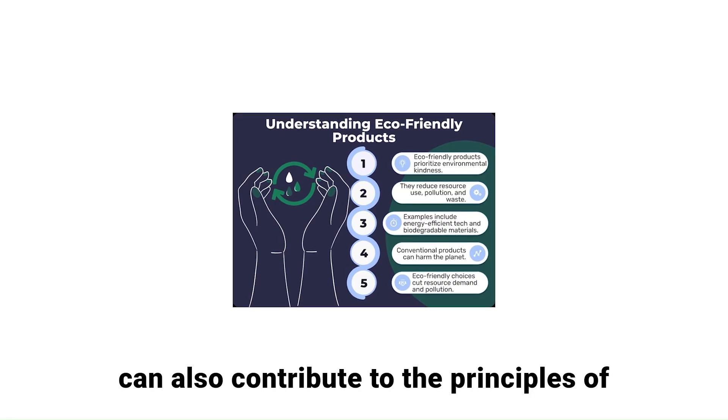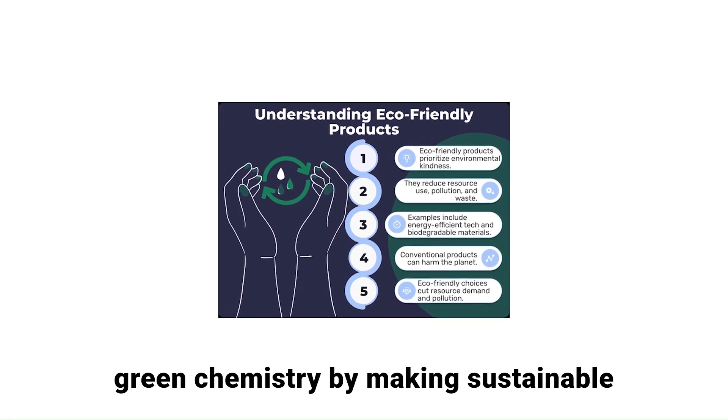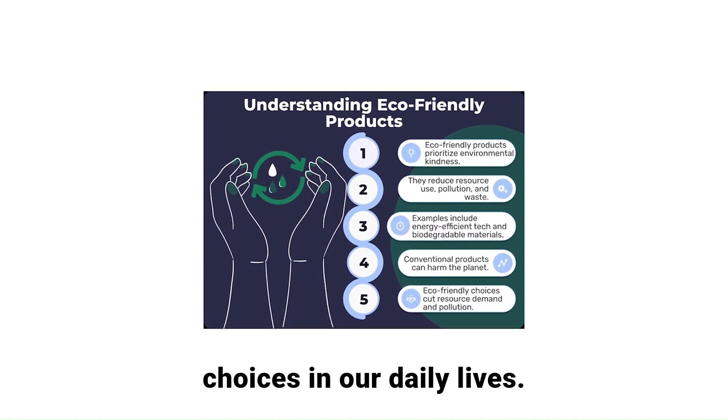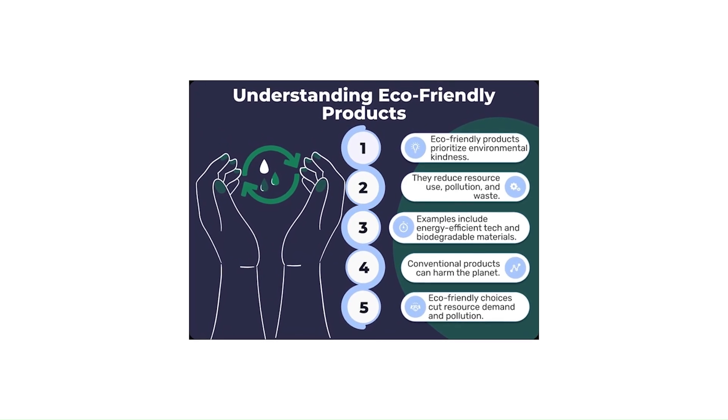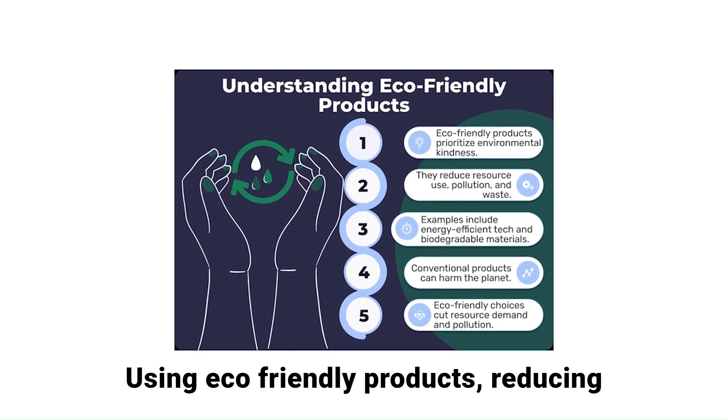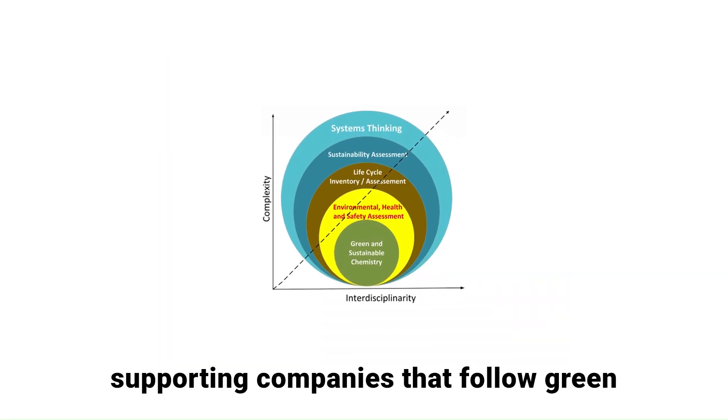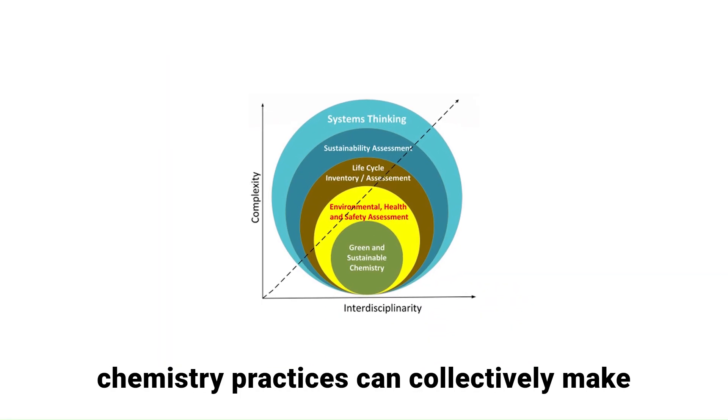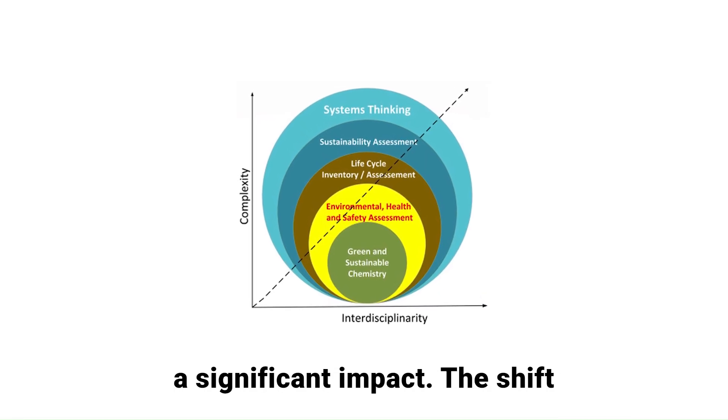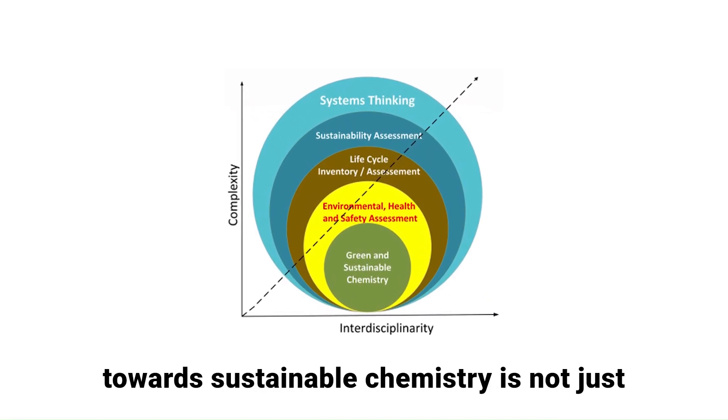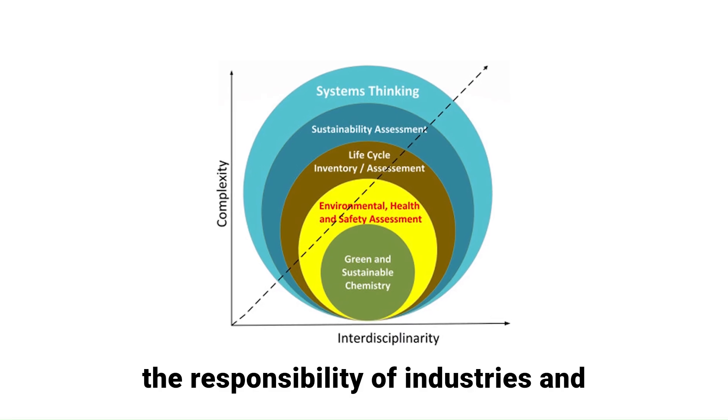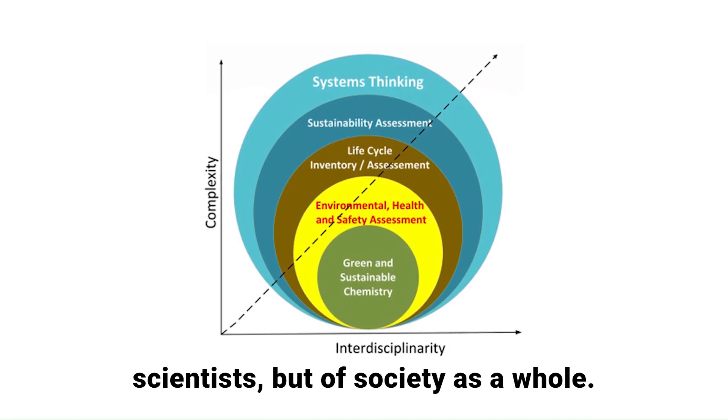As individuals, we can also contribute to the principles of green chemistry by making sustainable choices in our daily lives. Using eco-friendly products, reducing plastic consumption, recycling waste, and supporting companies that follow green chemistry practices can collectively make a significant impact. The shift towards sustainable chemistry is not just the responsibility of industries and scientists but of society as a whole.